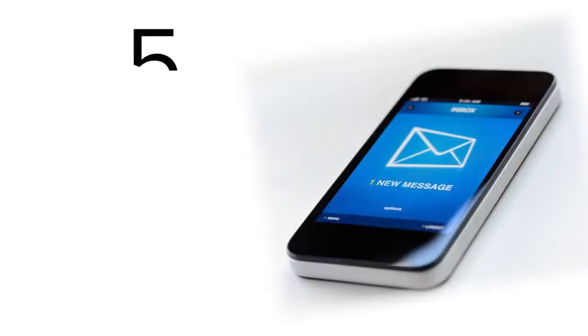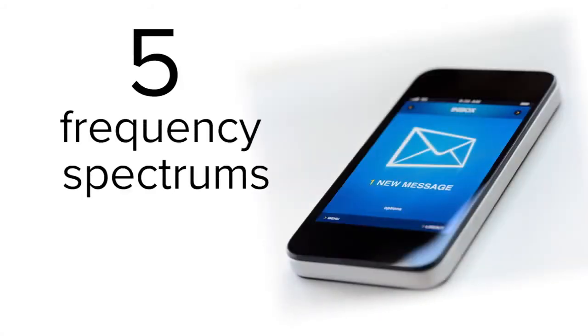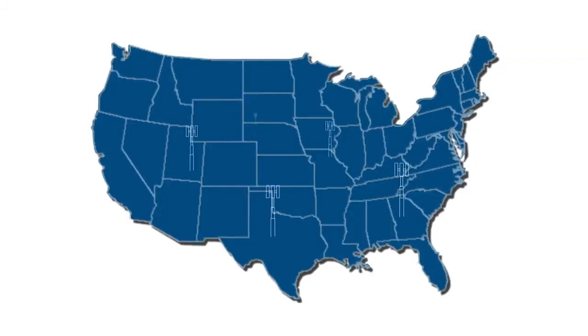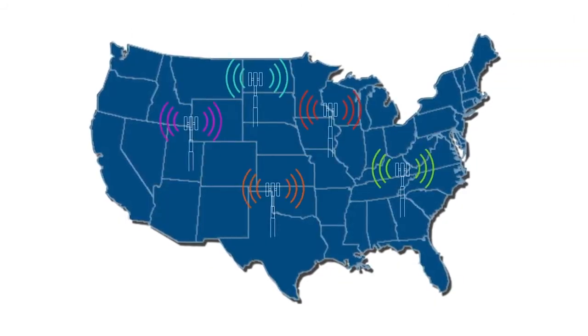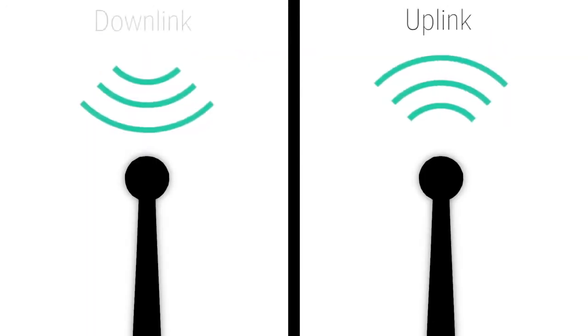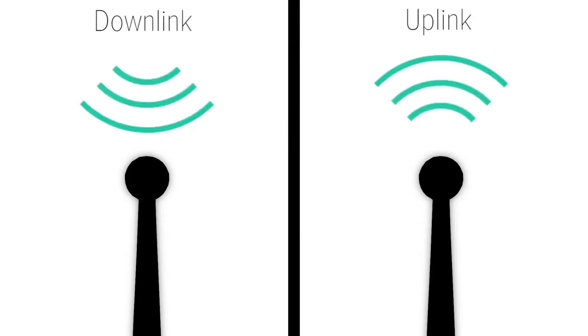Cellular signal is divided up into five frequency spectrums. Each of these spectrums is then divided into bands or channels. Each cell carrier owns and uses different bands and channels throughout the country. Cellular communication uses different channels for uplink and downlink within the same frequency.